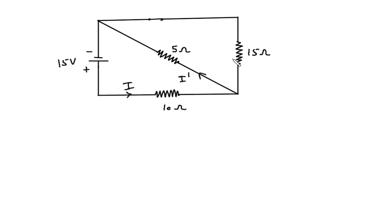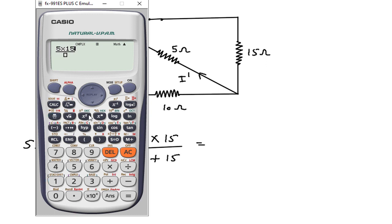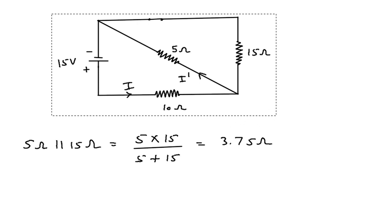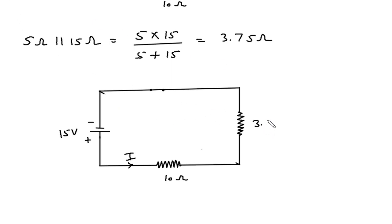Here we can see this 5 ohm and 15 ohm are connected in parallel. So 5 ohm parallel with 15 ohm is 5 into 15 divided by 5 plus 15, which equals 3.75 ohm. Now we can replace these two resistors by 3.75 ohm.